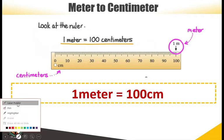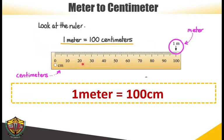1 meter is equivalent to 100 centimeters, based on the measuring tape.